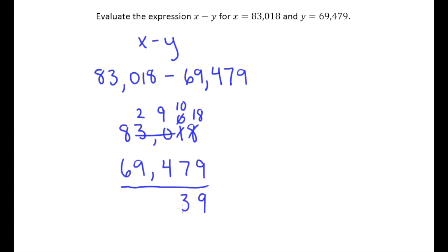So 10 minus 7 is 3, 9 minus 4 is 5, 2 minus 9 can't do that. Oops, just notice I forgot my subtraction symbol there.